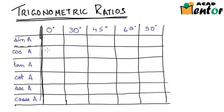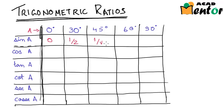Now I would like to fill this up with your help. Do we remember the values for sin A when A took the values of 0, 30 degrees, 45 degrees, 60 degrees, and 90 degrees? Sin of 0 degrees was 0, sin 30 degrees was 1/2, sin 45 degrees was 1/√2, sin 60 degrees was √3/2, and sin 90 degrees was 1.